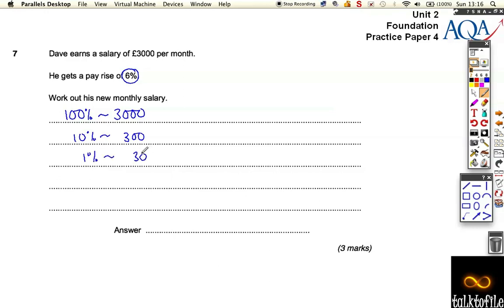That means we can work out his pay rise equals 6 times 30, because he's getting 6%, so he's getting six of these thirties, which is £180. That's how much his pay rises. Now if you got that, you would only get two of the marks.